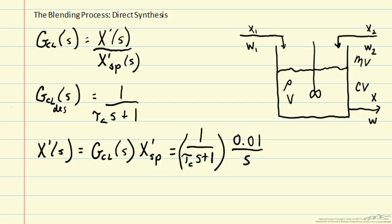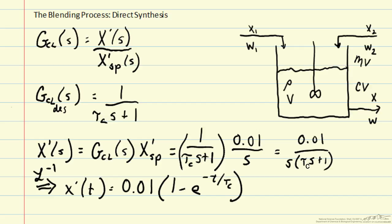So instead, we can specify tau c as the time constant over which the change would occur. And then we can take the inverse Laplace transform of that to get x prime of t equals 0.01 times 1 minus e to the minus t over tau c. Over a time scale of tau c, we will expect our system to approach the long-term value of 0.01, which is our set point value.